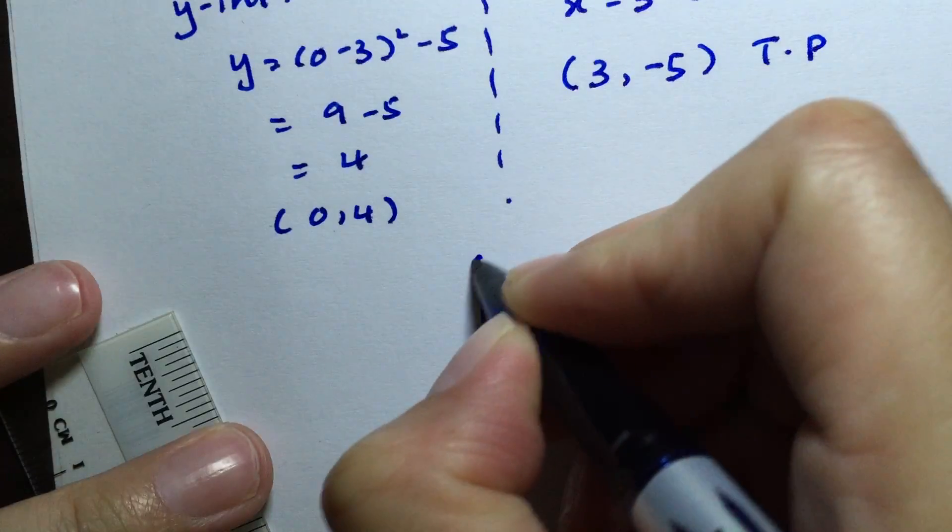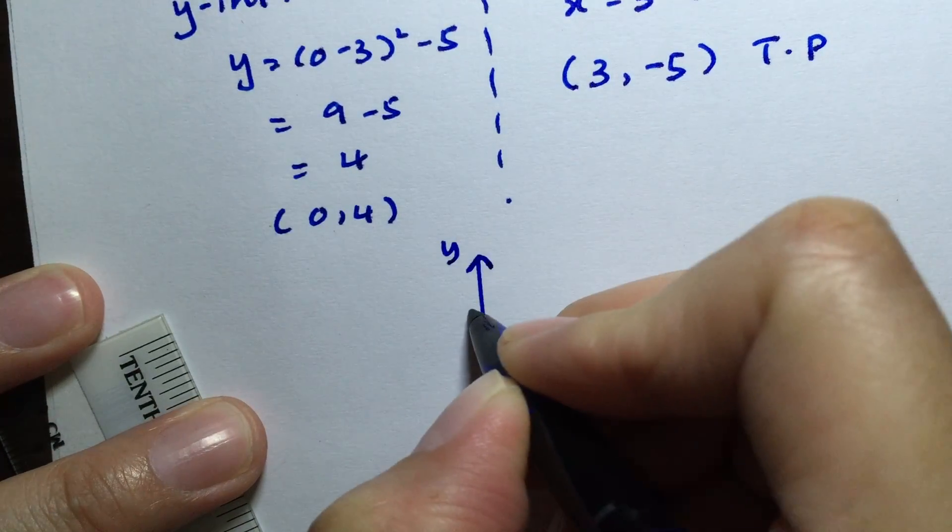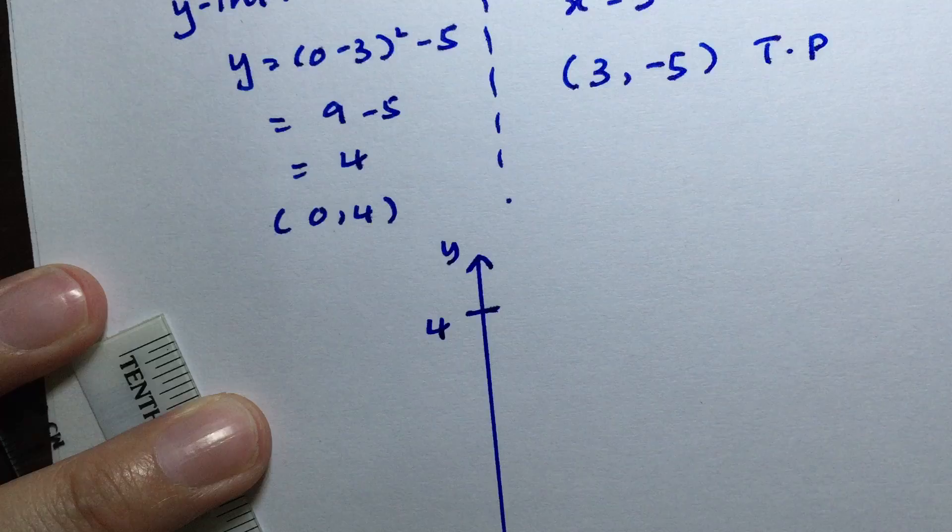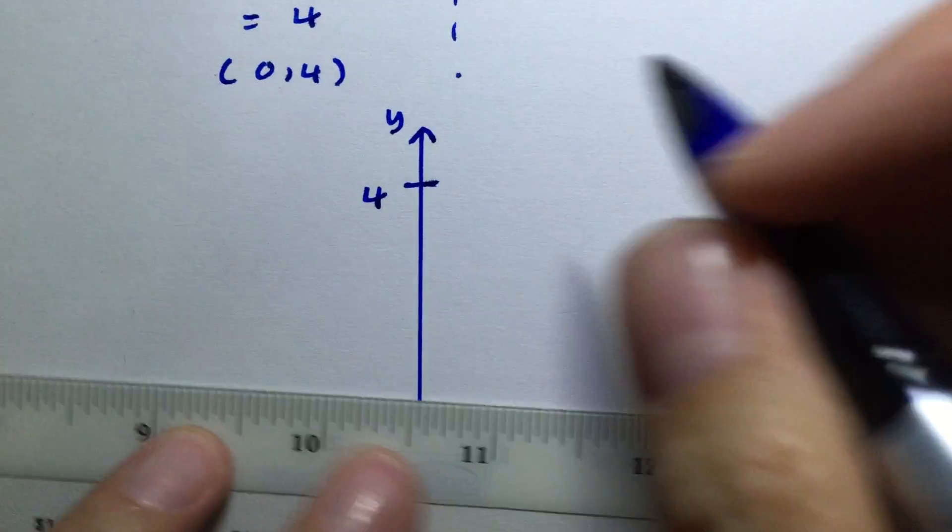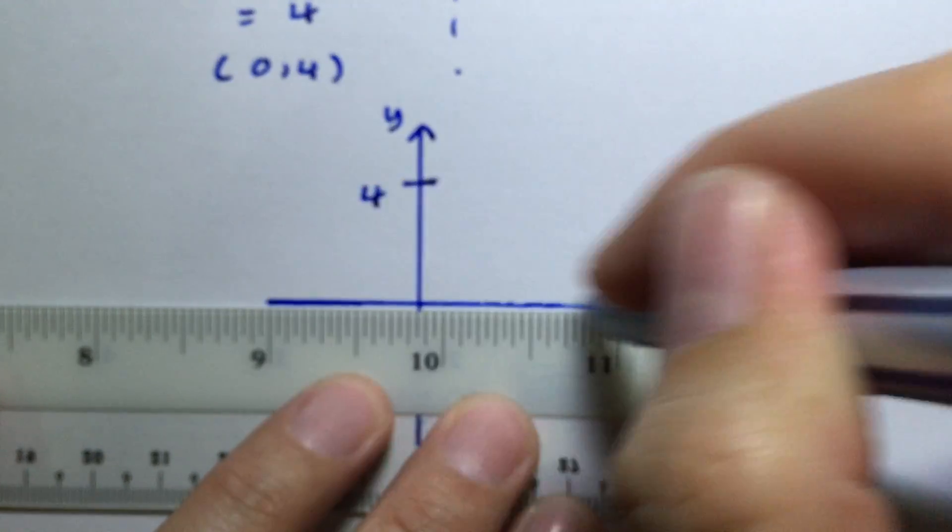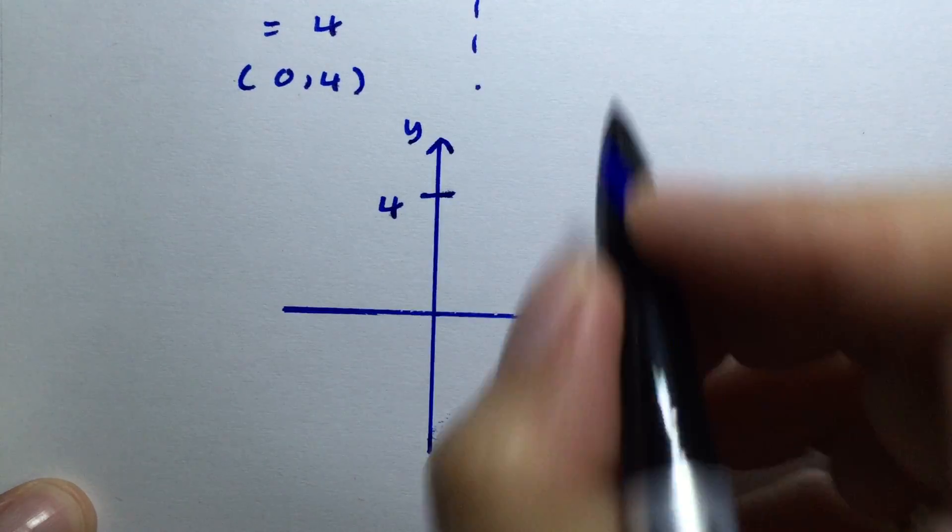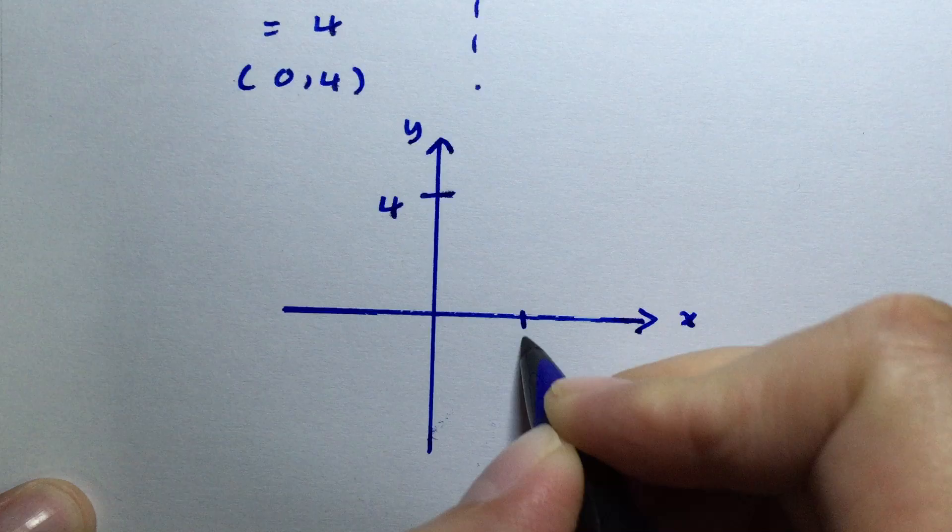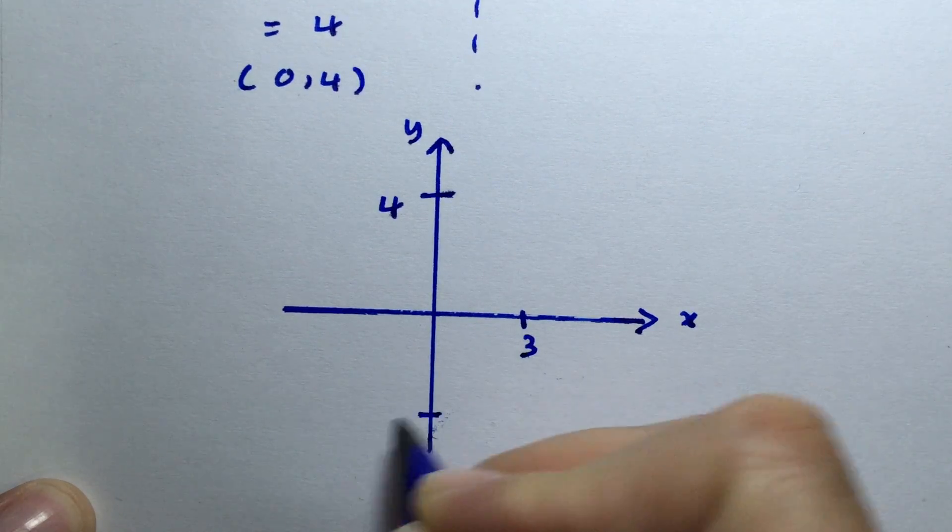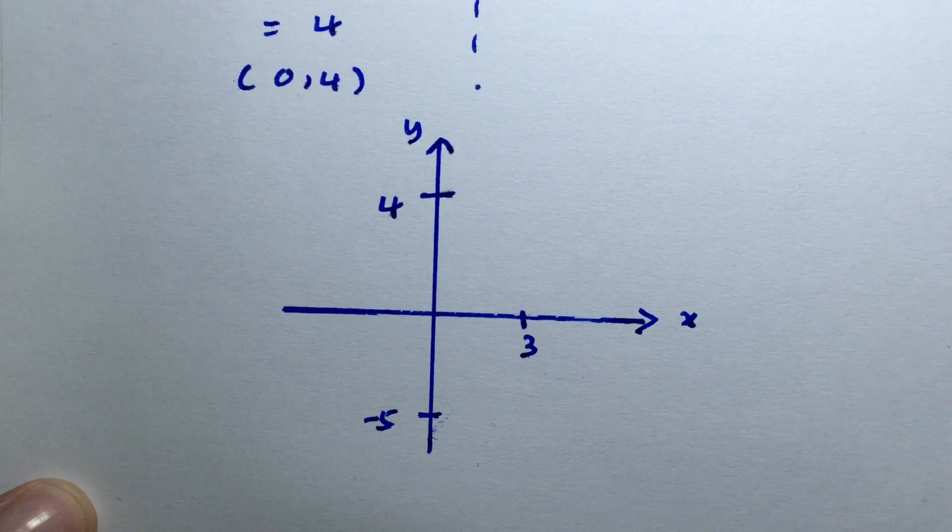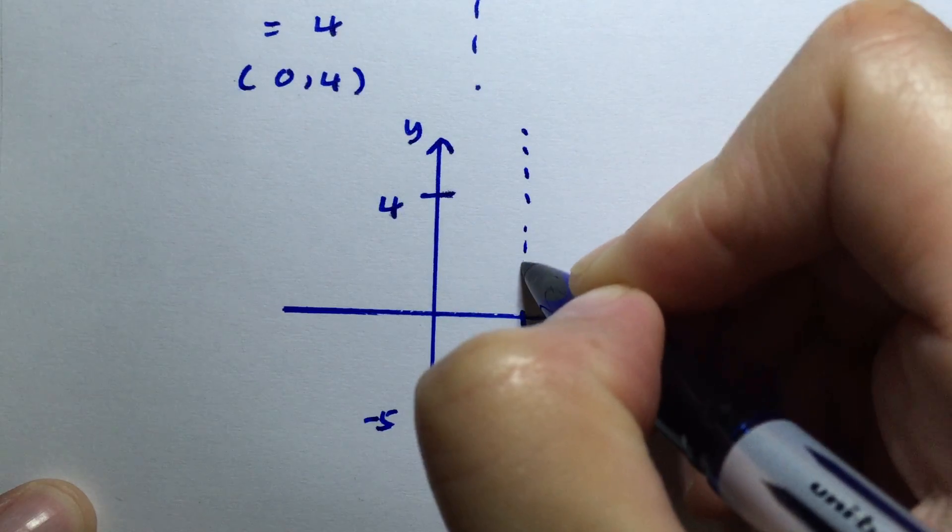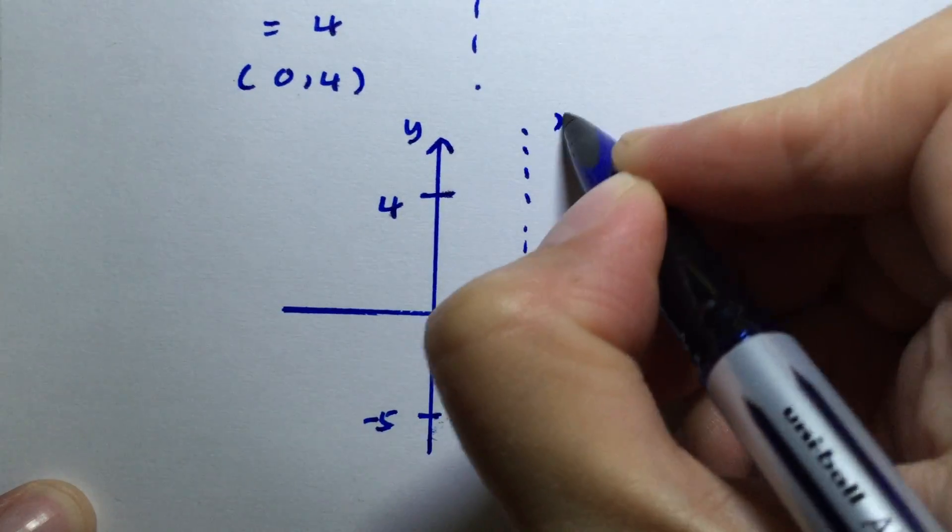On the y-axis we have 4, and on the x-axis we have 3. Negative 5 will be somewhere here on the y-axis. The line of symmetry is x = 3.